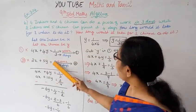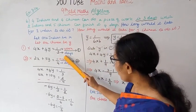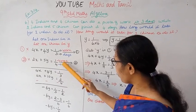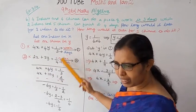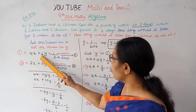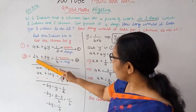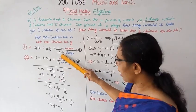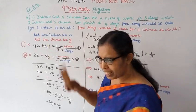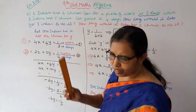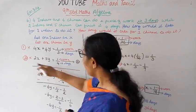Two Indians and five Chinese: 2x plus 5y can finish it in four days. So we write 2x plus 5y equals 1 by 4. We have two equations now. In the first equation we have 4 in both terms, in the second equation we have 2.